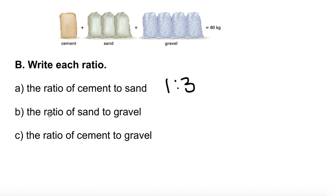One cement. The ratio of sand, three to gravel, four. And the ratio of cement, one to gravel, so one to four. Beautiful. Well done.